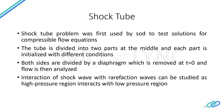The shock tube problem is simple in nature: it's a rectangular tube divided into two parts at the middle, each initialized with different conditions — one part with higher pressure and higher temperature, and the other with lower values. Both sides are divided by a diaphragm experimentally, and this diaphragm is removed at time t = 0, after which the flow is analyzed.